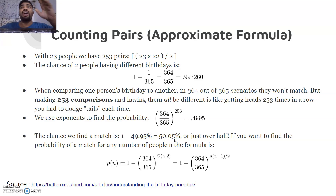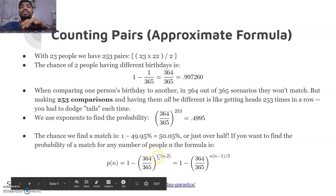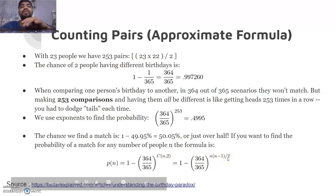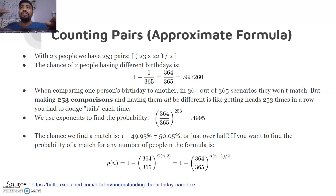To summarize the formula: for n people, the probability of a match is 1 minus (364/365)^C(n,2), where C(n,2) = n(n-1)/2. This is how we derive the result. Let's now understand this at a deeper level.